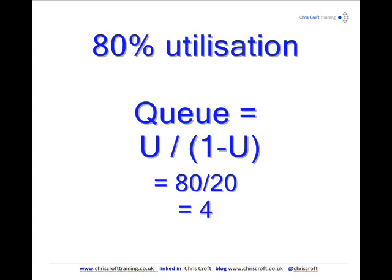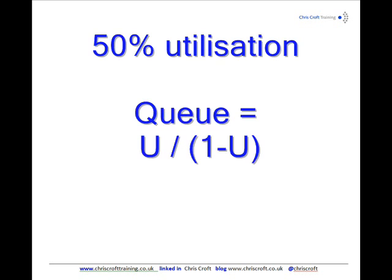So 80 over 20 is a queue length of 4. If you apply this formula to different utilizations, a utilization of only 50% means a queue length of only 1, because it's 50 over 50. That 1 is the person being served, so effectively you're not waiting at all. To not have to queue, you need a utilization of only 50% — you need basically double the number of people providing the service that you think you need.